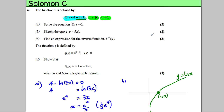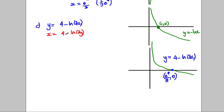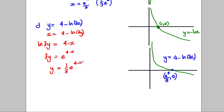Now find an expression for the inverse function. Let our function y be equal to 4 subtract the natural logarithm of 3x. When we find the inverse, we swap x and y, so x is equal to 4 subtract the natural logarithm of 3y. Now we make y the subject: add logarithm 3y to both sides and subtract x, giving ln(3y) = 4 subtract x. Taking exponentials of both sides, 3y equals e to the power of 4 subtract x. Dividing by 3, f⁻¹(x) is equal to one third e to the power of 4 subtract x.